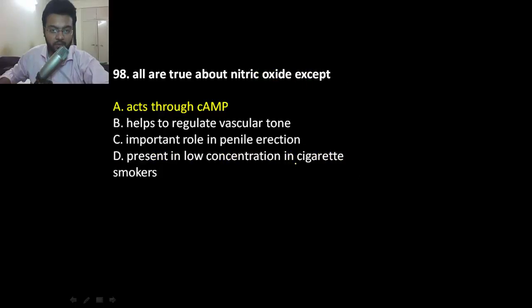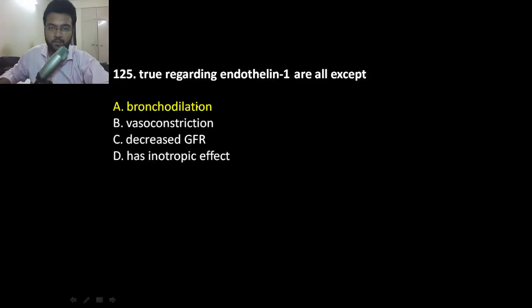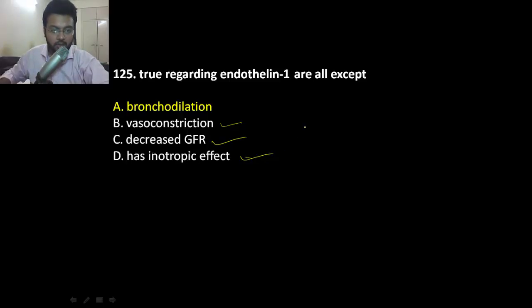Action of nitric oxide in the gastrointestinal tract is to relax smooth muscle. Nitric oxide acts through cyclic GMP, not cyclic AMP. Regarding endothelin-1: it results in vasoconstriction; in the renal system, vasoconstriction will result in decreased GFR; it has a slight positive inotropic effect; but it does not lead to bronchodilation — it results in bronchoconstriction.